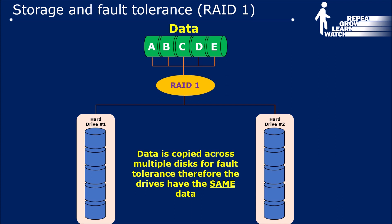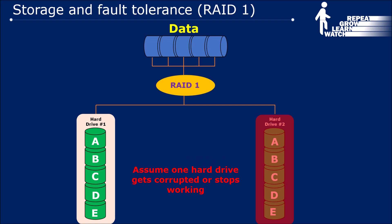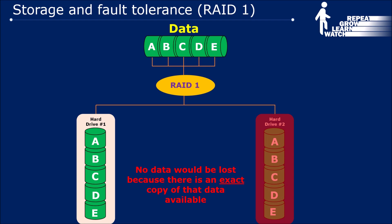In the case of RAID 1, the data is duplicated or copied onto multiple hard drives. All the drives have the same data, so if one hard drive goes down there is always a copy on the other drives. If a hard drive stops working — whether it gets corrupted or dies — no data would be lost, because we are maintaining multiple copies, mirroring the data onto multiple drives.